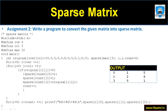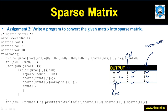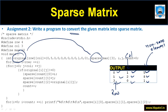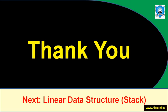The output will be: 0 1 5, 1 2 8, and 3 0 1. These represent the row number, column number, and non-zero elements respectively. This is how you can convert a regular matrix into a sparse matrix. The code is available on the link provided. Thank you everyone for watching this video. In the next video we will be talking about one more linear data structure — the stack.